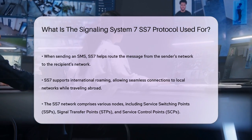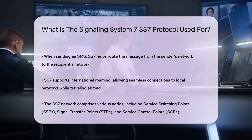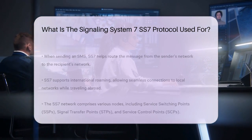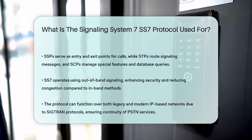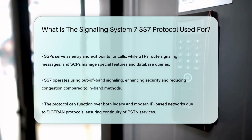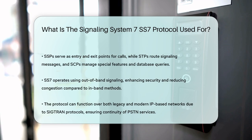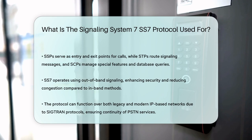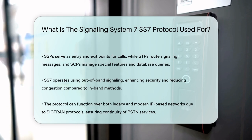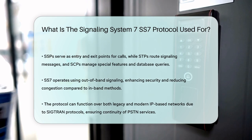SS7 operates using out-of-band signaling, which means that the control signals are sent over a separate channel from the voice or data traffic. This approach has significantly improved security and reduced congestion on voice paths compared to older in-band signaling methods. In addition to its core functions, SS7 can operate over both legacy and modern IP-based networks thanks to the Sigtran protocols. This allows PSTN services to continue functioning even as networks transition to more modern infrastructure.